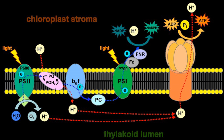Green sulfur bacteria contain a photosystem that is analogous to PSI in chloroplasts. There are two pathways of electron transfer. In cyclic electron transfer, electrons are removed from an excited chlorophyll molecule, passed through an electron transport chain to a proton pump, and then returned to the chlorophyll. The mobile electron carriers are, as usual, a lipid-soluble quinone and a water-soluble cytochrome. The resulting proton gradient is used to make ATP. In non-cyclic electron transfer, electrons are removed from an excited chlorophyll molecule and used to reduce NAD⁺ to NADH. The electrons removed from P840 must be replaced, which is accomplished by removing electrons from H₂S, which is oxidized to sulfur.